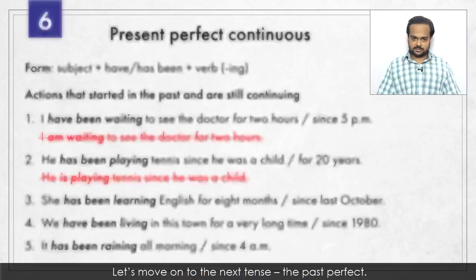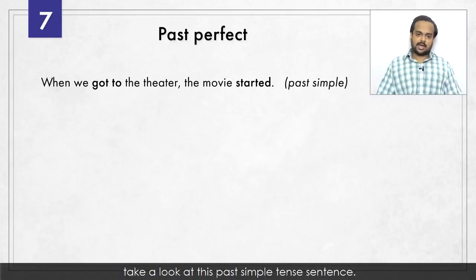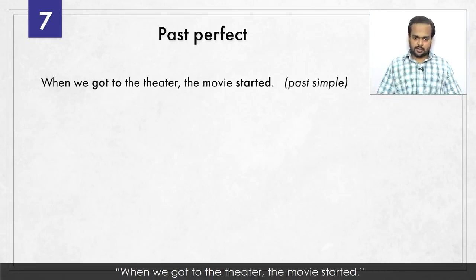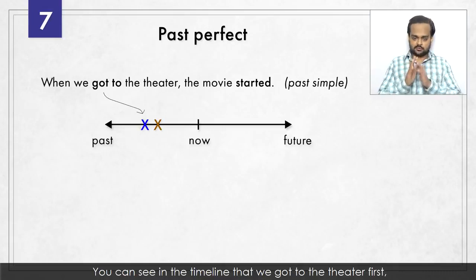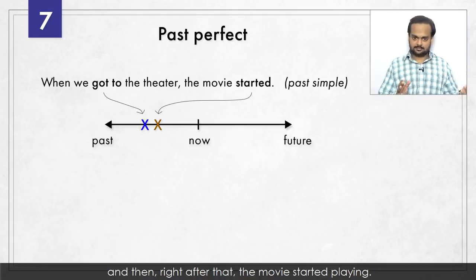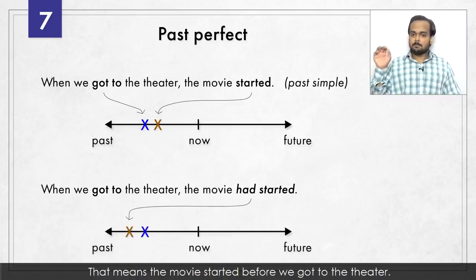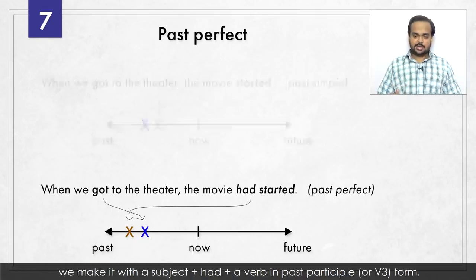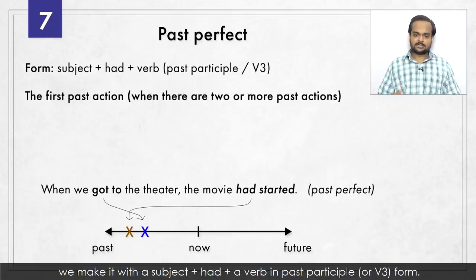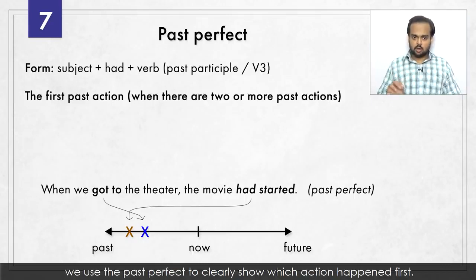Let's now move on to the past perfect. Consider this past simple sentence: 'When we got to the theatre, the movie started' – we arrived and then right after, the movie began. But 'When we got to the theatre, the movie had started' means the movie started before we arrived. This is the past perfect tense. We make it with a subject, plus had, plus a verb in past participle or V3 form. When we have two actions in the past, we use the past perfect to clearly show which action happened first.